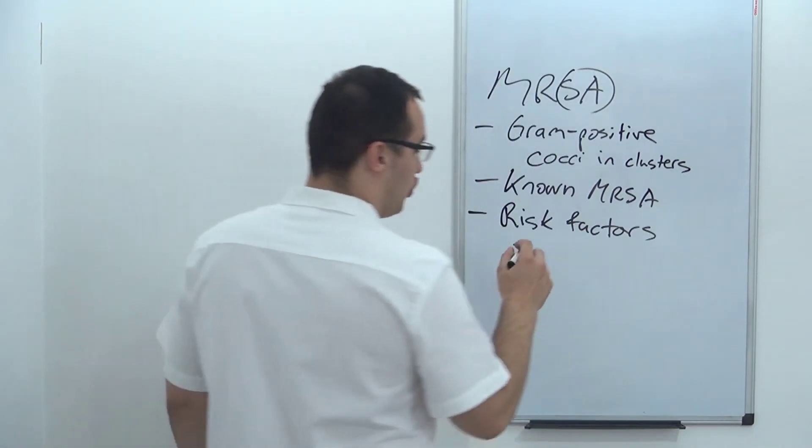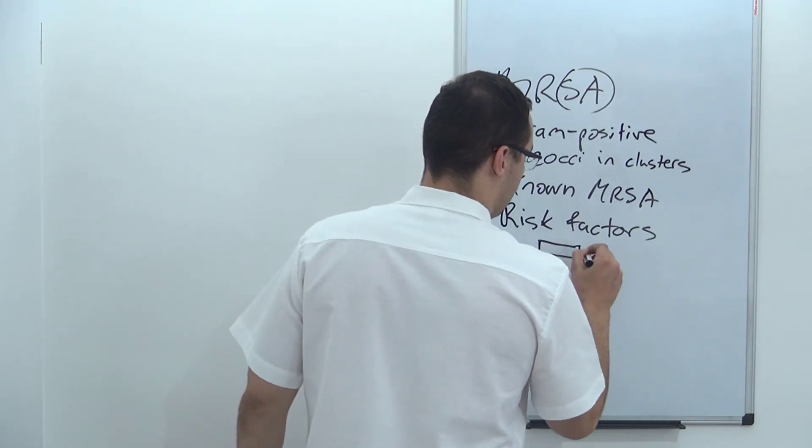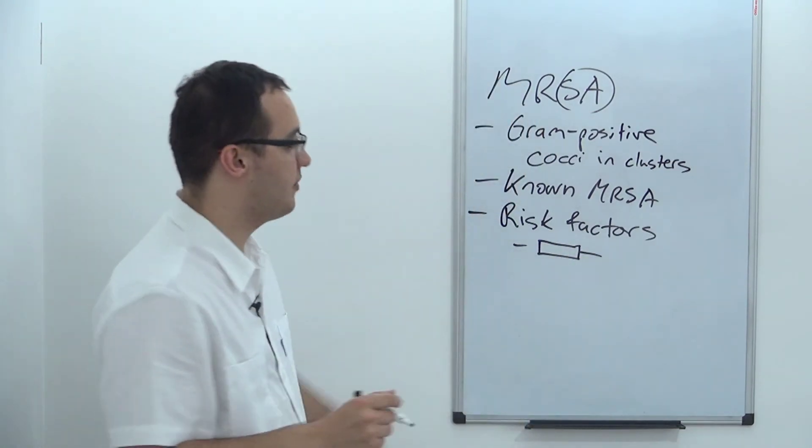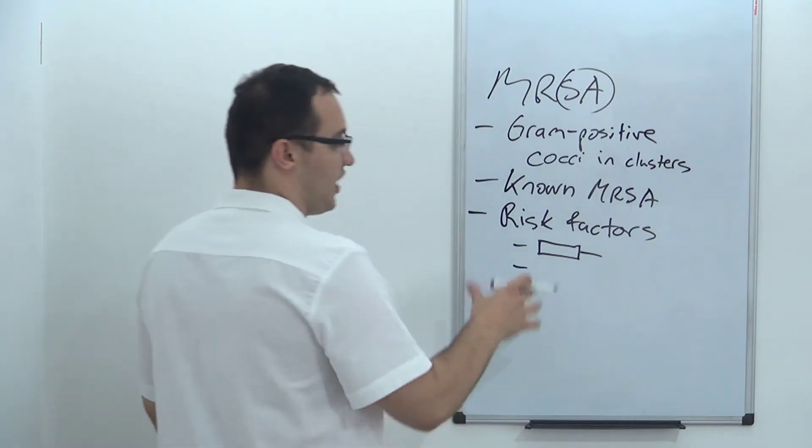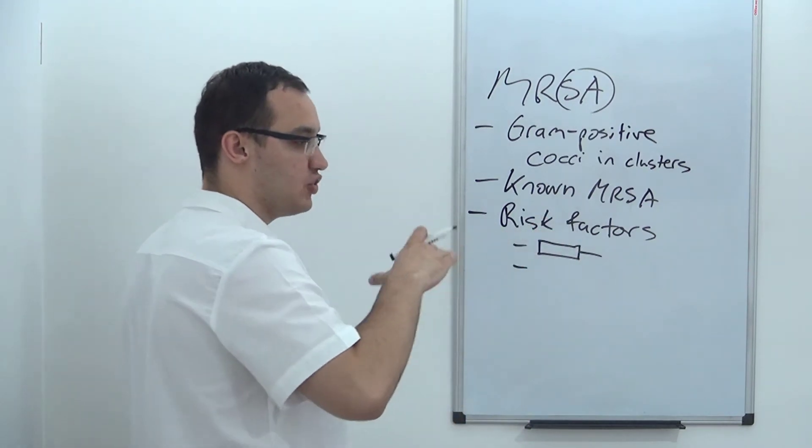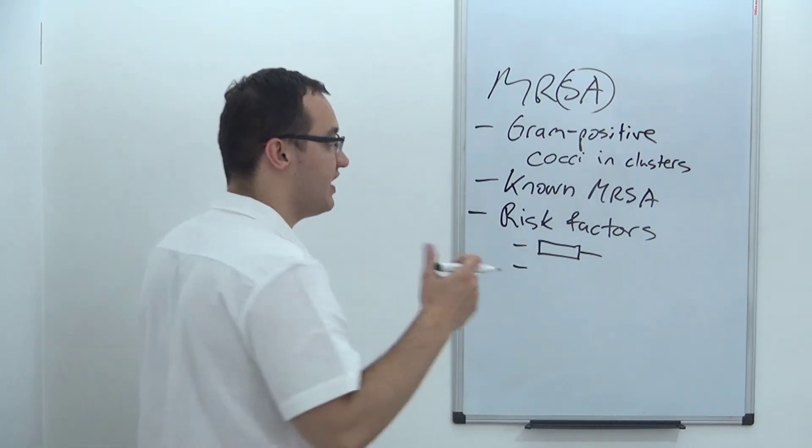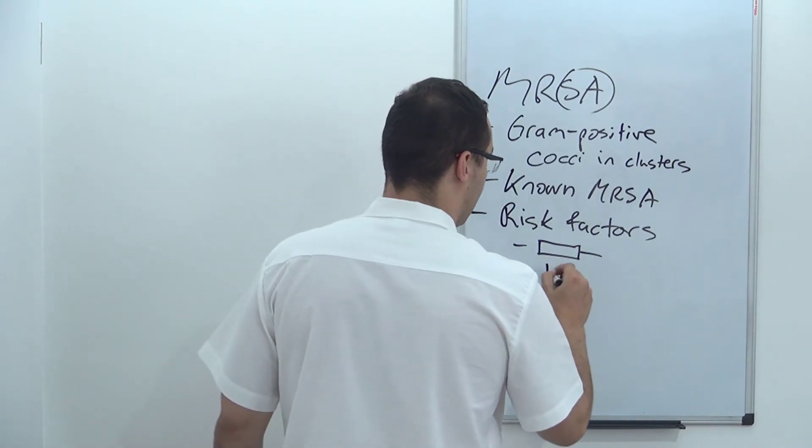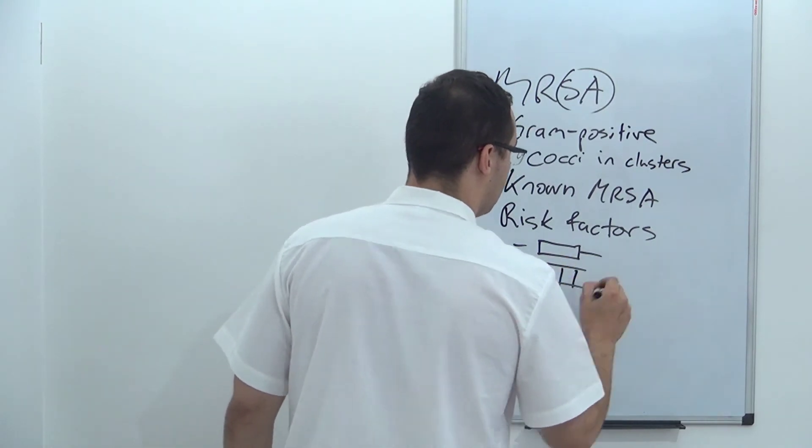Those who are drug abusers. So this is a needle representing drug abusers. Those have, these are patients that have higher probability of getting MRSA. Those, for example, that are in the prison, that are in prison. This will represent prison.